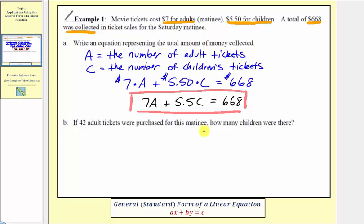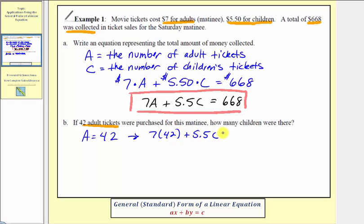Now for part B, if 42 adult tickets were purchased for this matinee, how many children were there? Because we were given that 42 adult tickets were purchased, we now know that A is equal to 42. So to answer this question, we'll substitute 42 for A and solve for C. We'd have seven times 42, plus five point five C, equals six hundred sixty-eight.